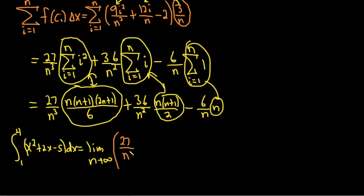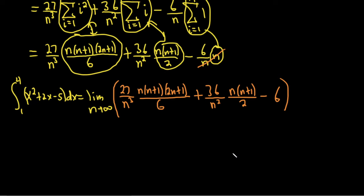I'm going to put this in parentheses. 27 over n³, n(n+1)(2n+1) all over 6. My handwriting is deteriorating. These problems are long. Plus 36 over n². Then we have n(n+1) over 2 minus. I'm going to go ahead and cancel it. I can't take it. 6. All right. And this is equal to.